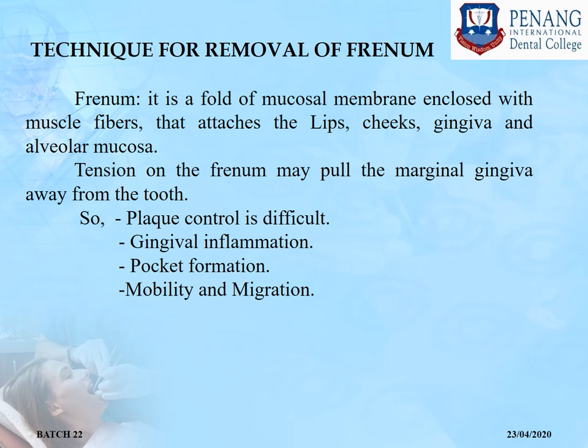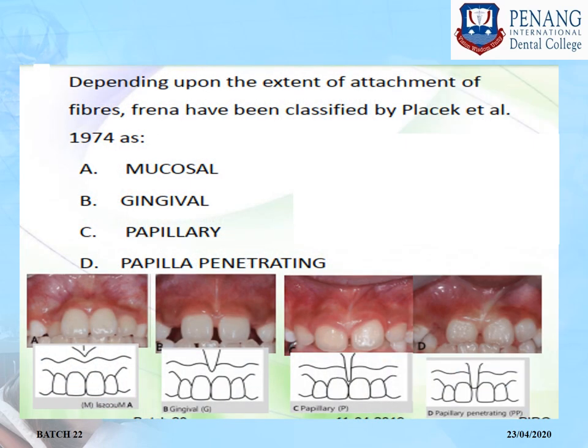Then comes the technique for frenulum removal. The frenum is a fold of mucosal membrane enclosing muscle fibers that attaches the lips, cheeks, gingiva, and alveolar mucosa. Tension on the frenum may pull the marginal gingiva away from the tooth, making plaque control difficult and potentially causing gingival inflammation, pocket formation, mobility, and migration. Depending on the extent of fiber attachment, frenula have been classified by Placek et al. in 1974 as: mucosal, gingival, papillary, and papillary penetrating.